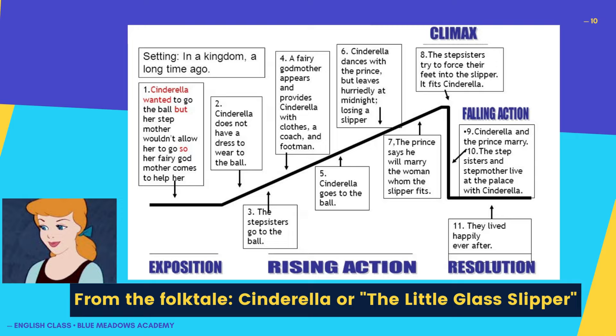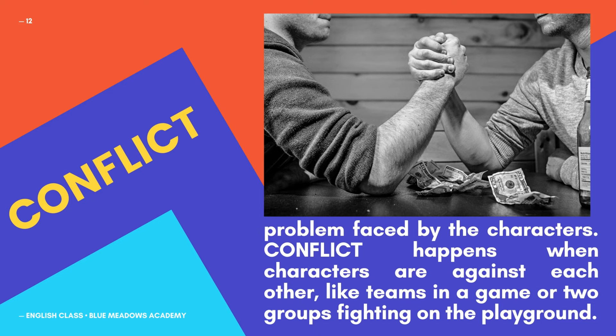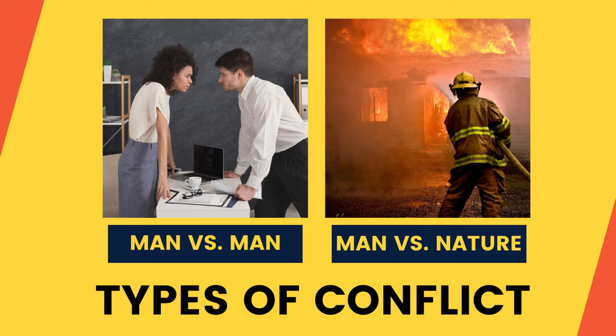The next short story element is conflict. Every story needs to have a problem, and this problem is called conflict. These four types of conflict are the following: Man vs. Man, Man vs. Nature, Man vs. Himself, and Man vs. Society.